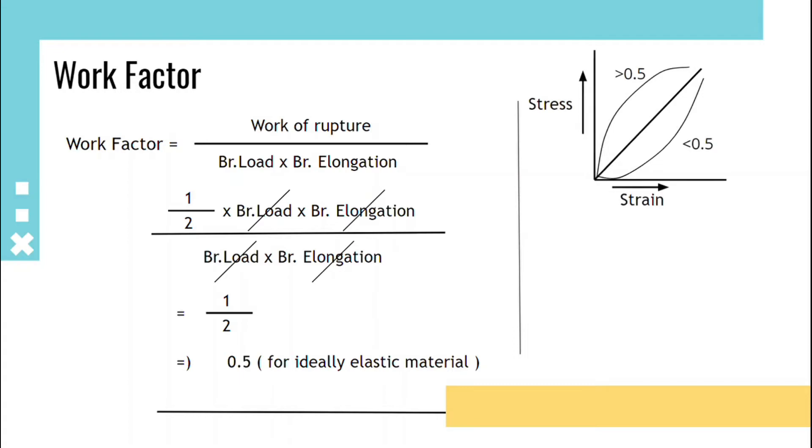Cotton, jute, flax, ramie, and hemp have a work factor of 0.5. Silk, wool, nylon, and viscose have 0.6, and acetate has 0.72.